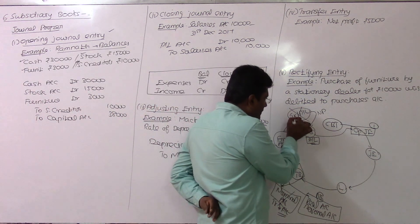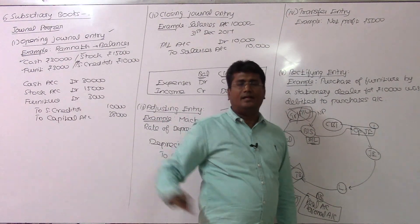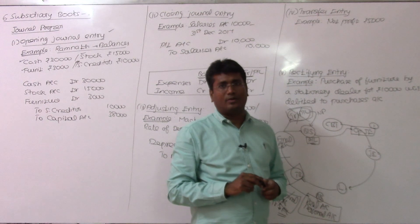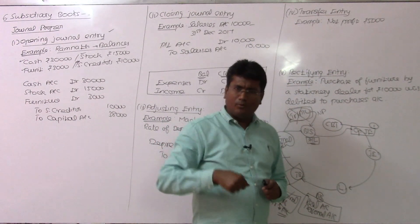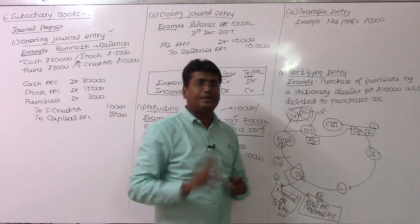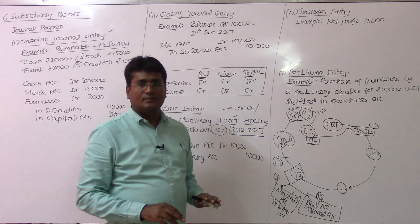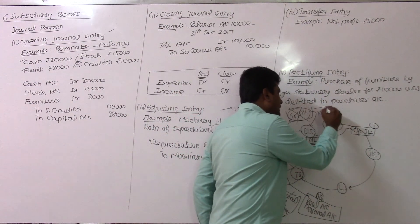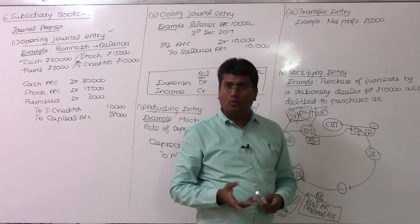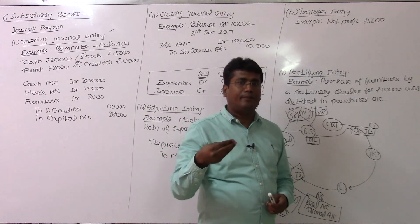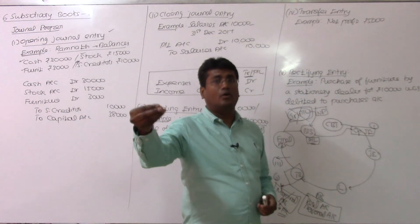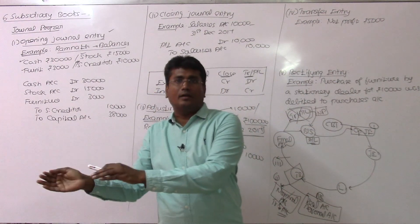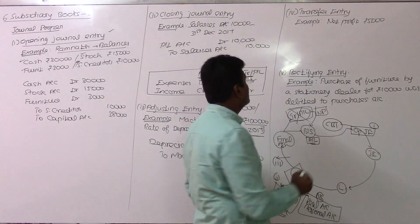Transfer entry: This involves transferring the trading and P&L balance. For taxation purposes, records must be maintained for at least eight years. The end result is the net profit. Whatever profit or loss you get by preparing the P&L account is meant for the owner. The capital will be adjusted — profit is added. So profit and loss is transferred to the owner's capital account. That is why it is called a transfer entry — from trading and P&L to the balance sheet.